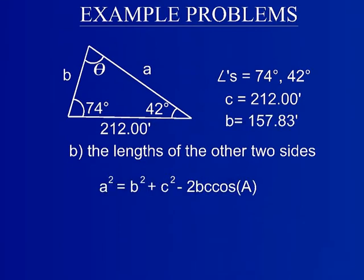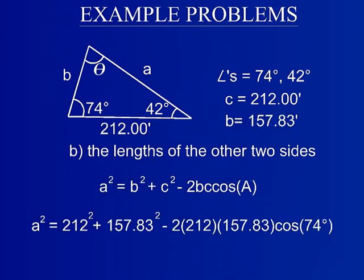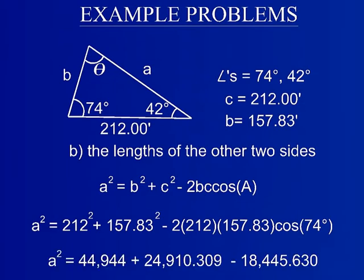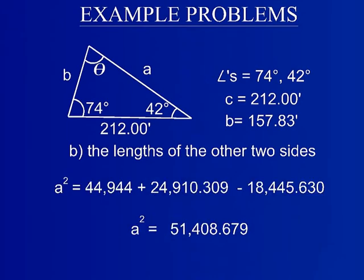Next, use the law of cosines to find the last unknown side. Insert all of the necessary information into the equation, then solve for side a. The resulting side length of side a is 226.73 feet.